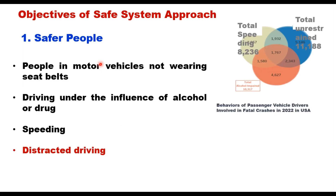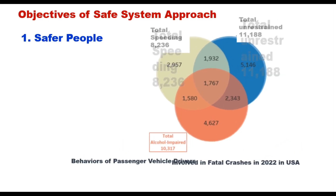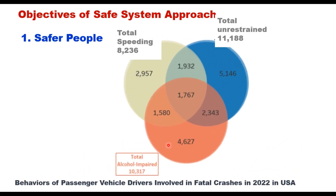There are four frequent and persistent behavioral safety factors in fatal crashes: people in motor vehicles not wearing seat belts, driving under the influence of alcohol or drugs, speeding, and distracted driving. This Venn diagram shows the behavior of passenger vehicle drivers and factors involved in fatal crashes in 2022 in the USA. Three factors are identified: total speeding, total unrestrained (without seat belt), and total alcohol-impaired driving.